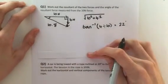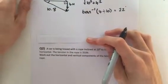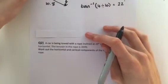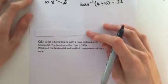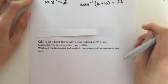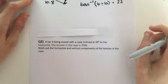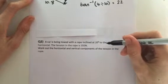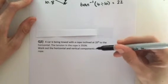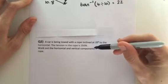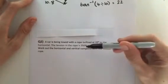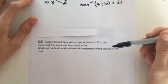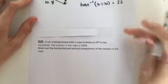Excellent. So let's go on to question 2. If you haven't done question 2 already, pause the video. So a car is being towed with a rope inclined at 20 degrees to the horizontal. The tension in the rope is 350 newtons. Work out the horizontal and vertical components of the tension in the rope.